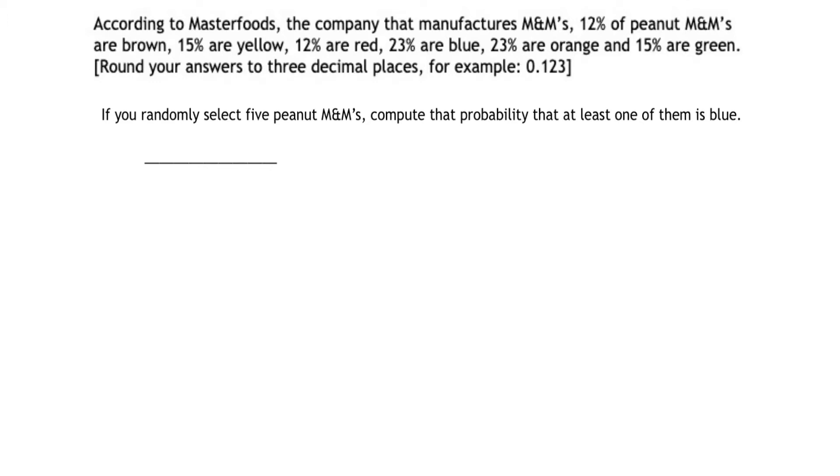So let me get a visual going again. Like in our last example, we have a series of independent events going on. That is, we're selecting five random peanut M&Ms. Now we want to know what is the probability that at least one of them is blue.